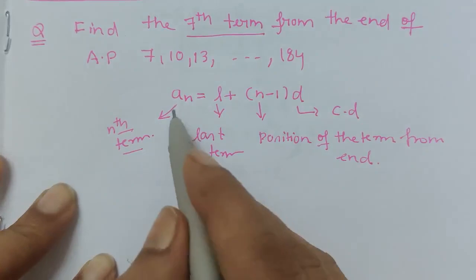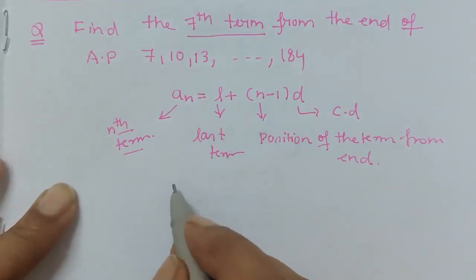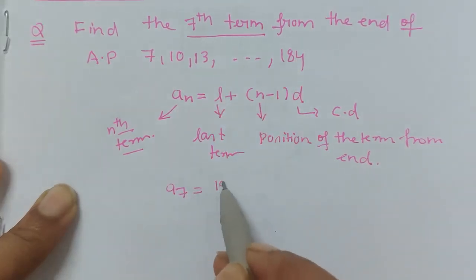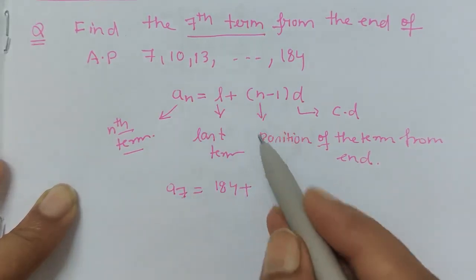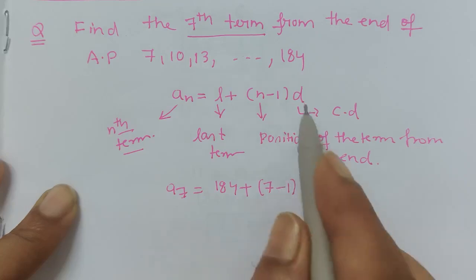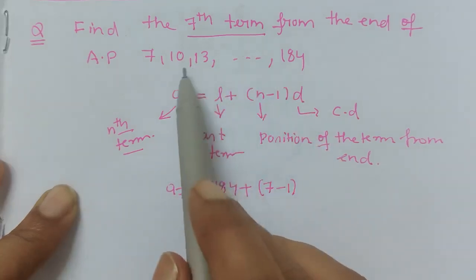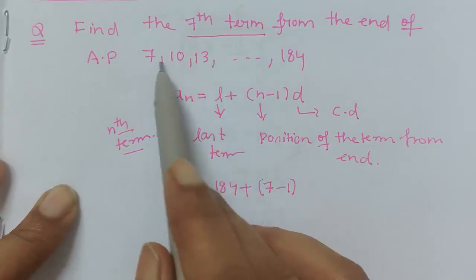So here we are talking about seventh term. When we put the values in the formula we get a₇ is equal to l, which is the last term 184, plus we are talking about seventh term so in the place of n we will put 7 minus 1 into the common difference here is 3, which we can see 10 minus 7 is 3.